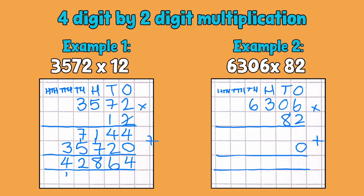Let's start by multiplying 6,306 by 2. Two sixes are 12 — unit down, carry the 10. No twos are nothing, add the one we carried over is just one. Then 2 times 3 is 6, straight in there, and 2 times 6 is 12 — nothing else to multiply by here. So multiplying 6,306 by 2 is 12,612. That's my units side done. I'll strike through that so I don't have to go back to it.